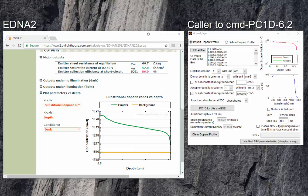The two tools have similar features. They can both import or define dopant profiles. They both calculate the emitter sheet resistance at equilibrium, the emitter saturation current density,